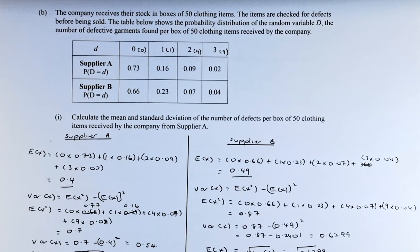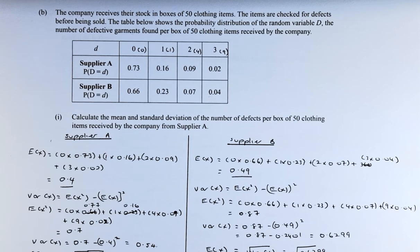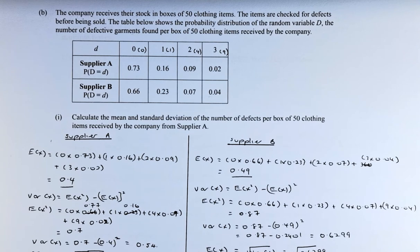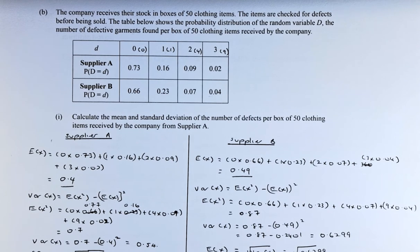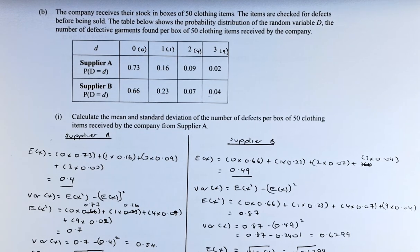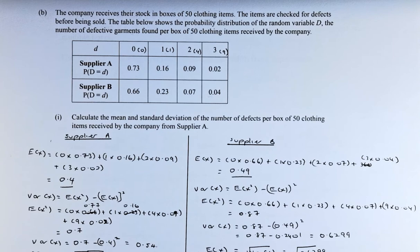Good day! In this video, we are going to solve question 2B of the 2022 NCA Level 3 statistics paper on probability distribution. Without further ado, let's read the question. The company received their stock in boxes of 30 clothing items. The items are checked for defects before being sold. The table below shows the probability distribution of the random variable D, the number of defective garments found per box of 50 clothing items received by the company.